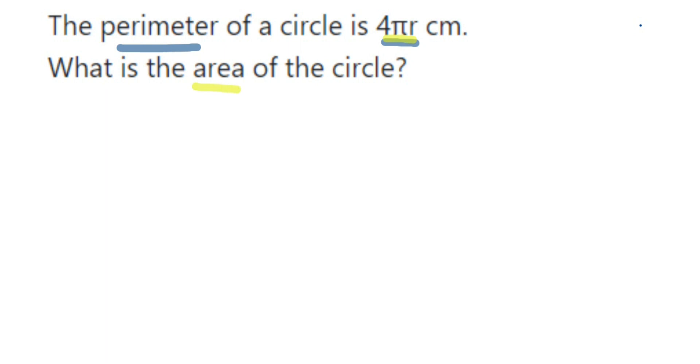Now what they have given, let us write down. So they have given circumference, that is perimeter means circumference, C is equal to 4πr centimeters. I'm not writing centimeter here. And we have to find out the area. To find out the area we should know radius.